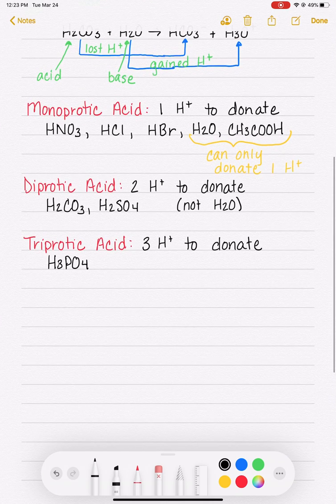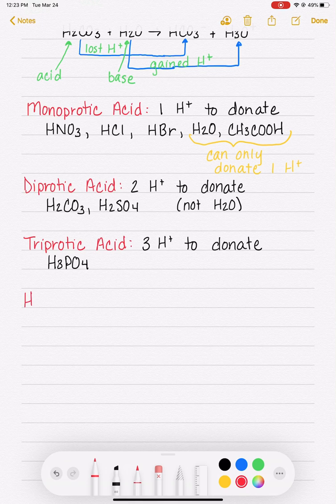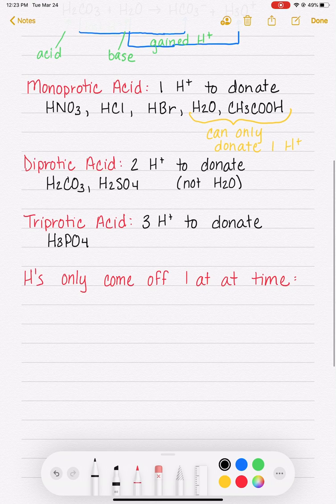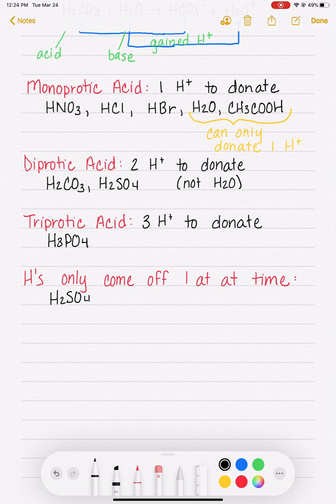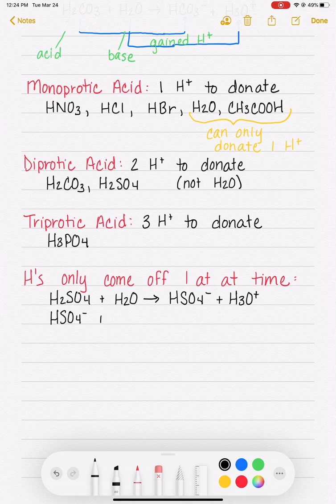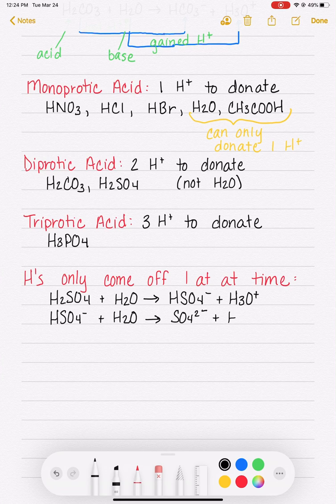For diprotic and triprotic acids, the hydrogens only come off one at a time. So this means, for the most part, that let's use H2SO4 as our example. H2SO4 reacting with water—the first thing that happens is that all of the H2SO4 molecules lose one of their hydrogens, and once they've all lost one hydrogen, then the HSO4- minuses can lose hydrogen number two. And the same is going to be true for tripriotic acids—they will lose one and then they'll lose the second one and then they'll lose the third one.